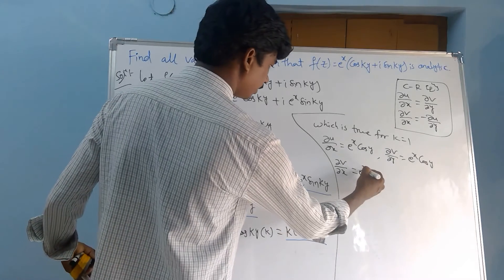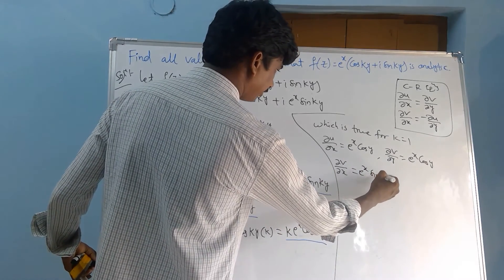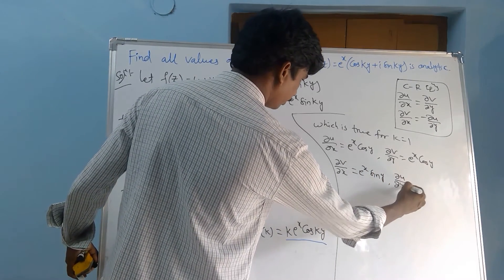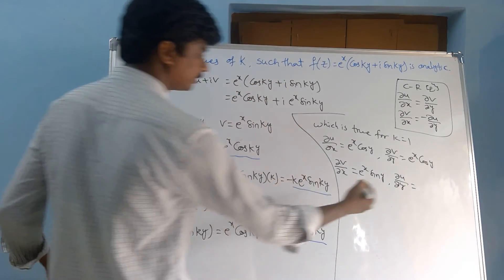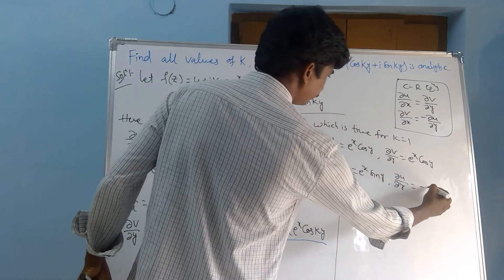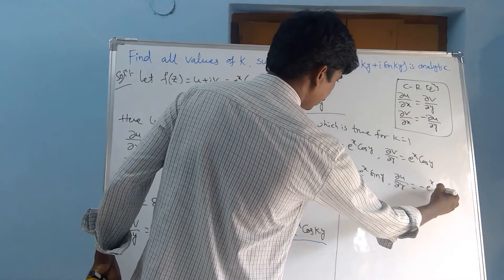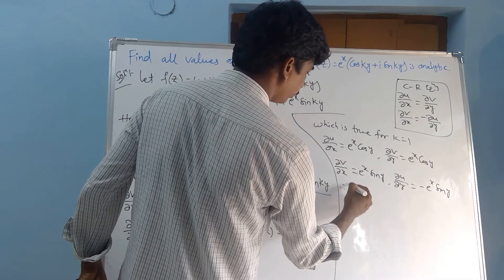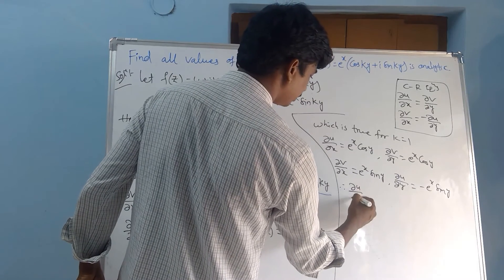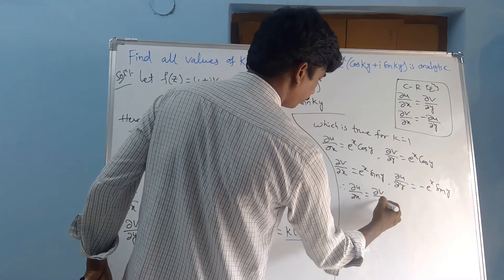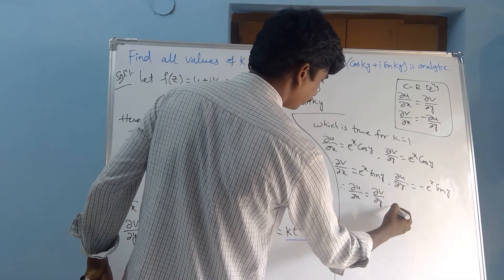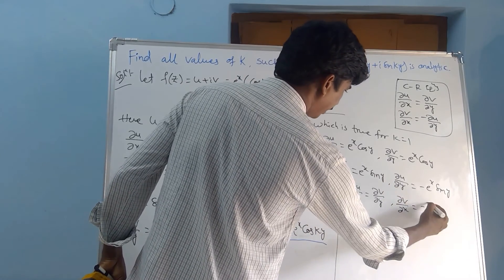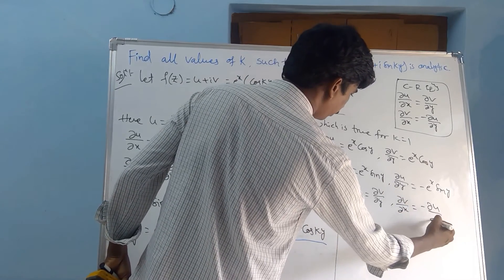With k = 1: ∂v/∂x = e^x · sin(y), and ∂u/∂y = −e^x · sin(y), so ∂v/∂x = −∂u/∂y. Therefore ∂u/∂x = ∂v/∂y and ∂v/∂x = −∂u/∂y, which are the CR conditions.